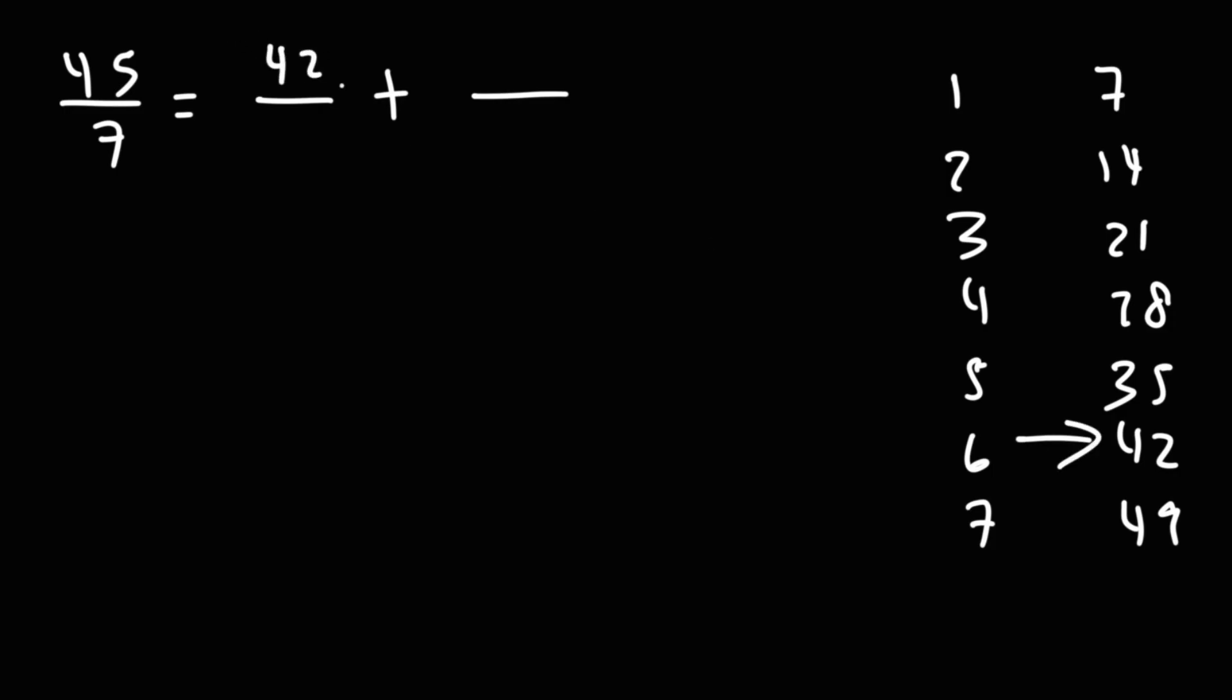And 45 minus 42 is 3. So I'm going to break down 45 over 7 into 42 over 7 plus 3 over 7. 42 divided by 7 is 6, as we can see here. So we have 6 plus 3 sevenths. So as a mixed number, that's going to be 6 and 3 sevenths.